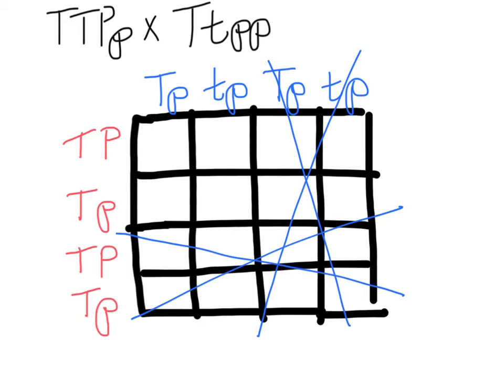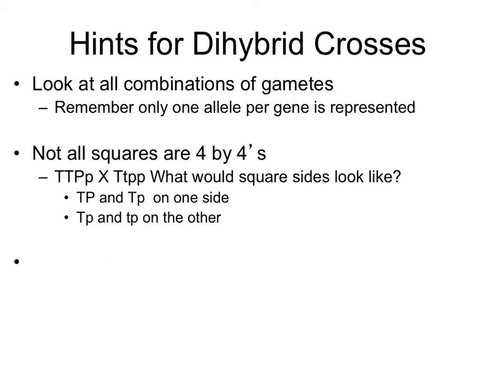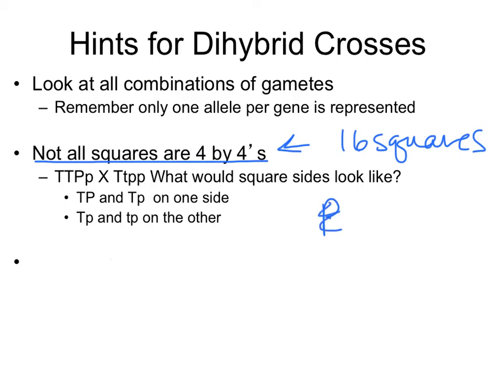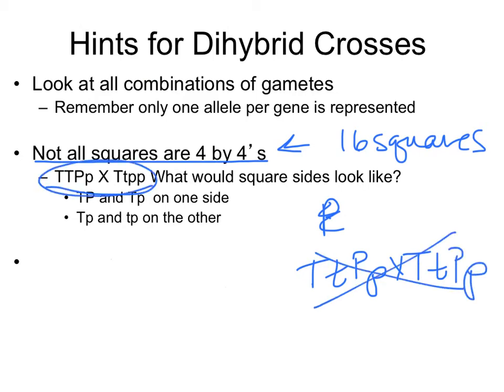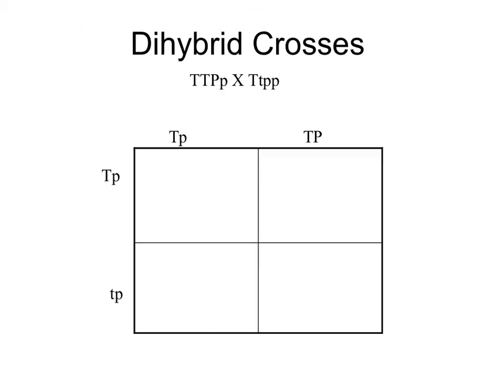If we do that, we see that not all of our Punnett squares are four-by-fours. Not all of them are going to be 16 squares when we have two genes. As it turns out, the only crosses that require all sixteen squares are when both parents are heterozygotes. That's not what we're doing here — we're doing this specific cross, so we don't need to fill all of them out.